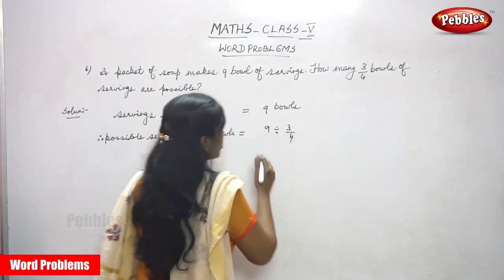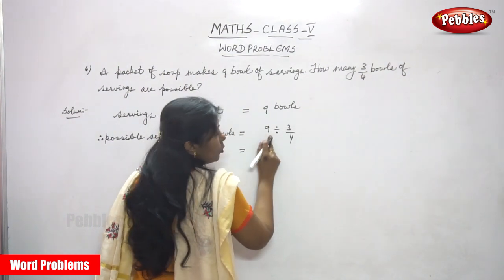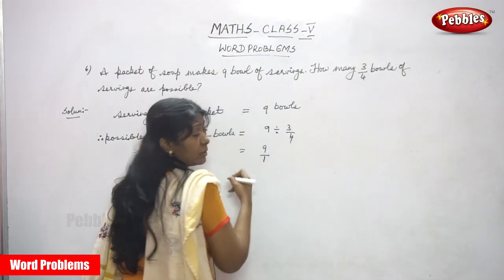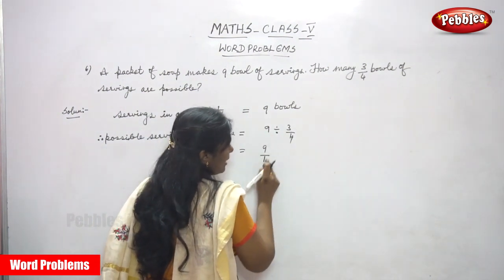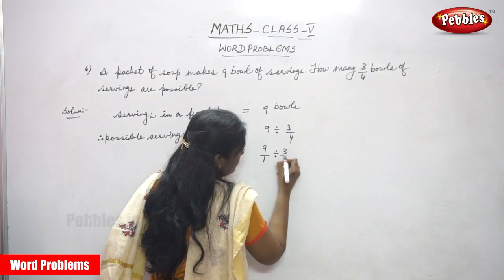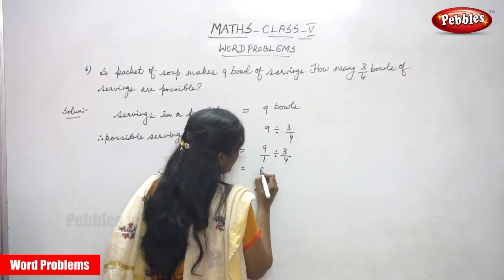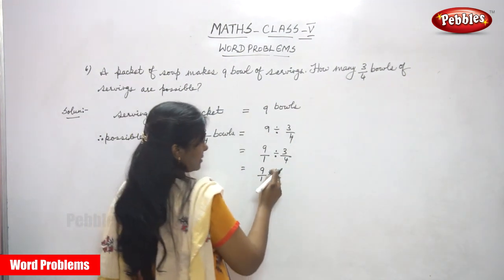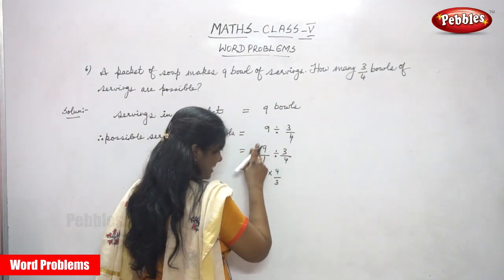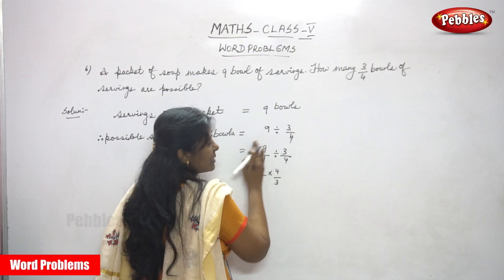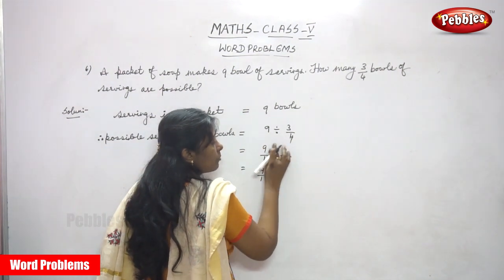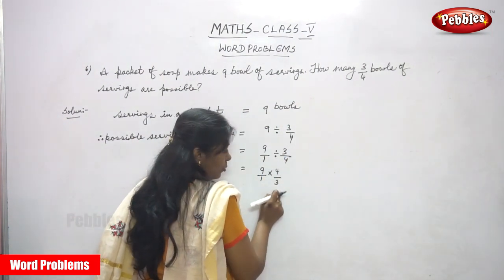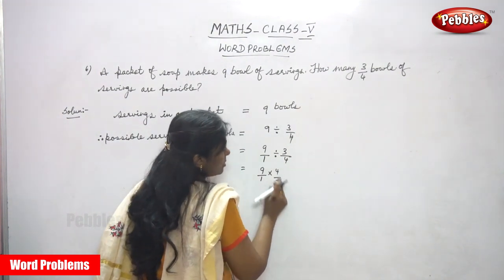Nine is a whole number, and three by four is a fraction. So you have to make this whole number as a fraction. So nine by one, after that again division by three by four. So nine by one into four by three — you have to reciprocate this fraction. Nine by one is the dividend, divided by the divisor three by four. In division, you have to reciprocate the divisor, which gives four by three.